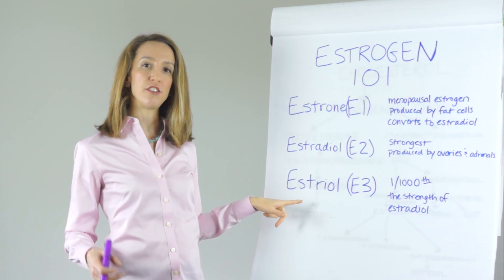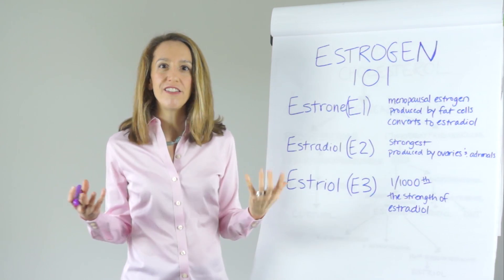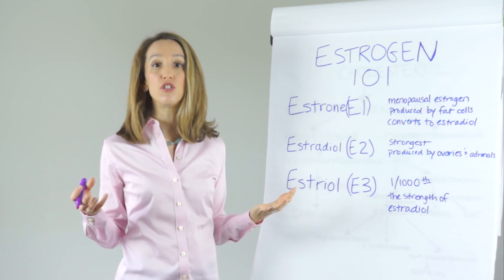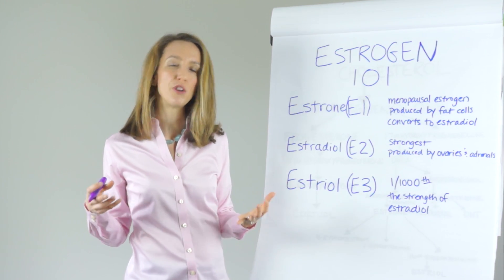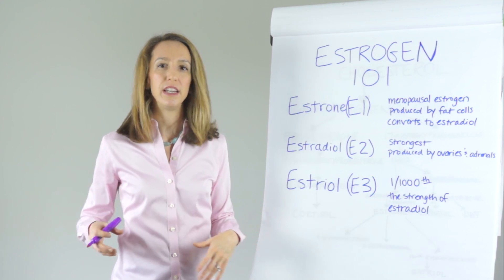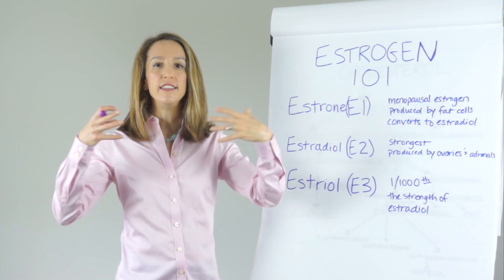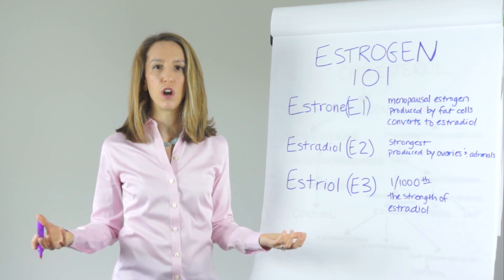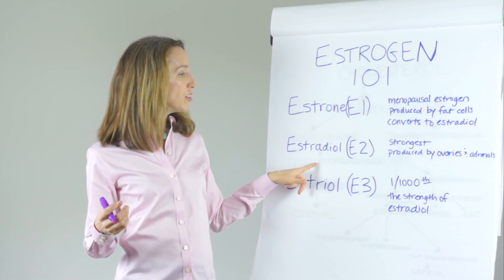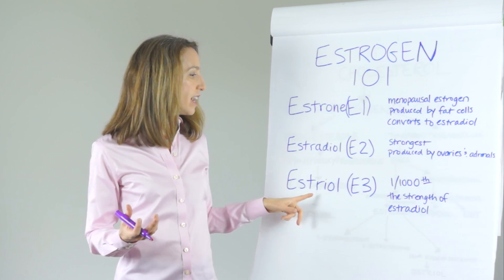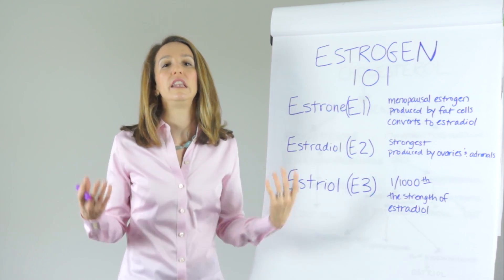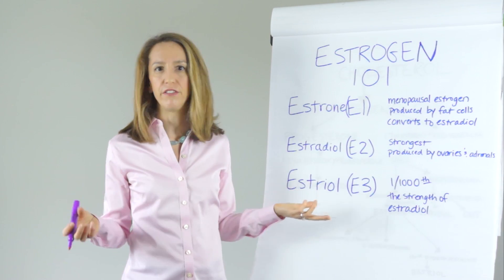E3, or estriol, is a thousandth the strength of estradiol. So it's a safer form of estrogen when we're talking about cancer because cancer is a situation of overgrowth. Estradiol encourages cellular division and growth, whereas estriol does so much slower.